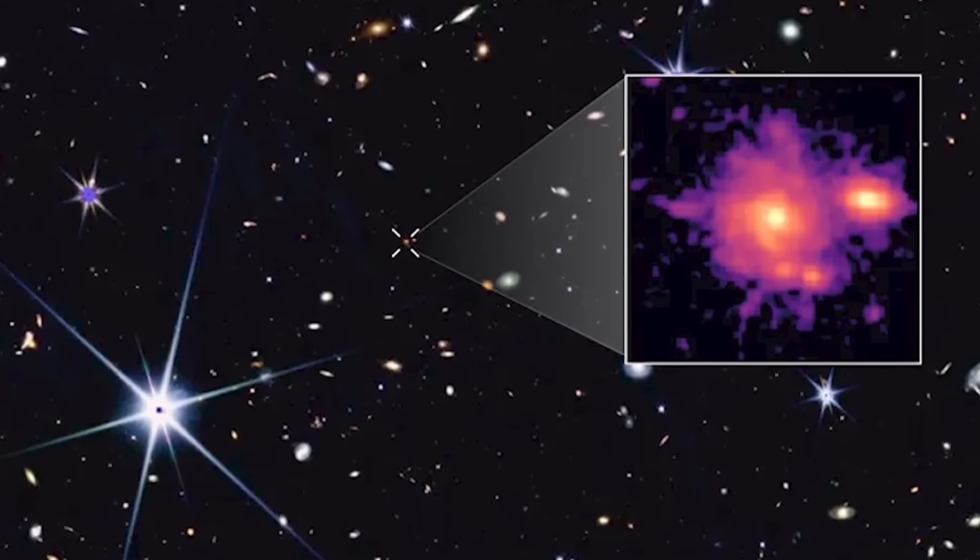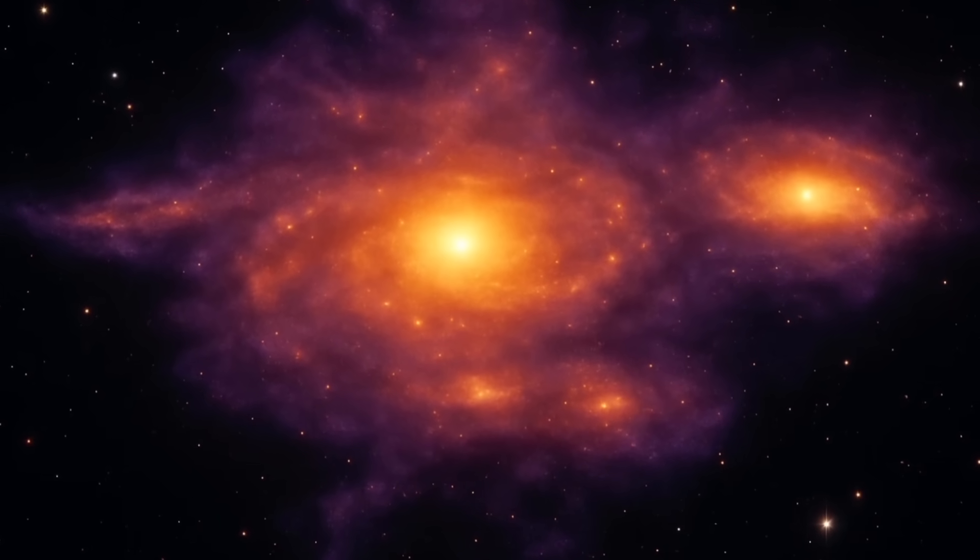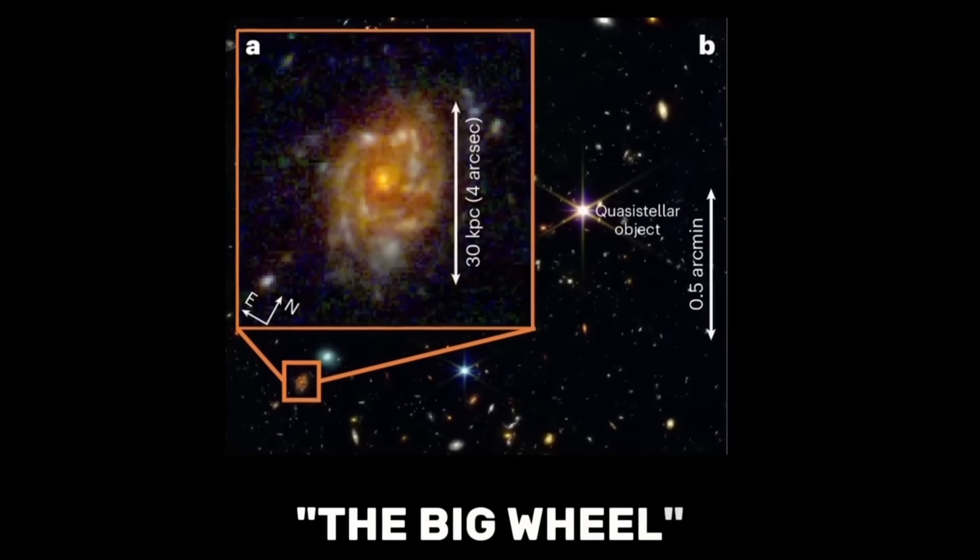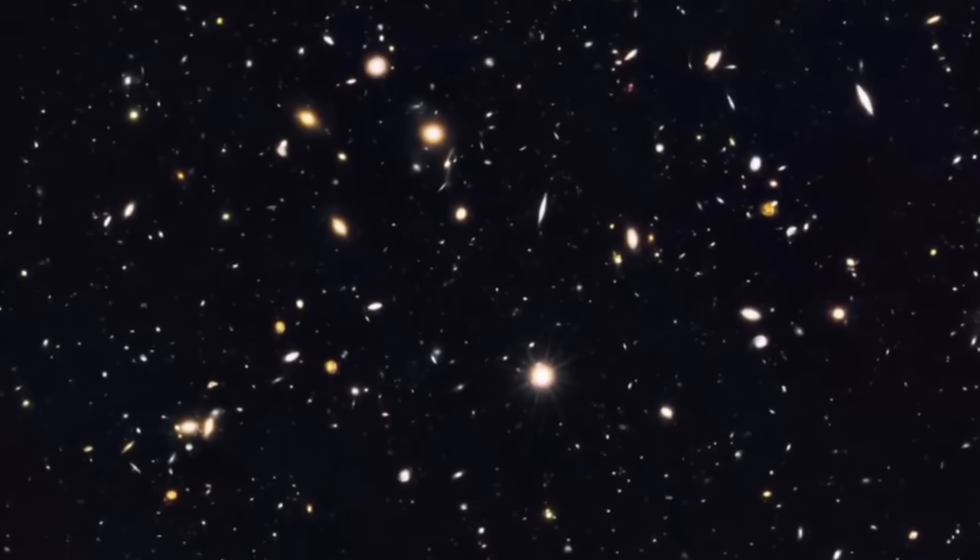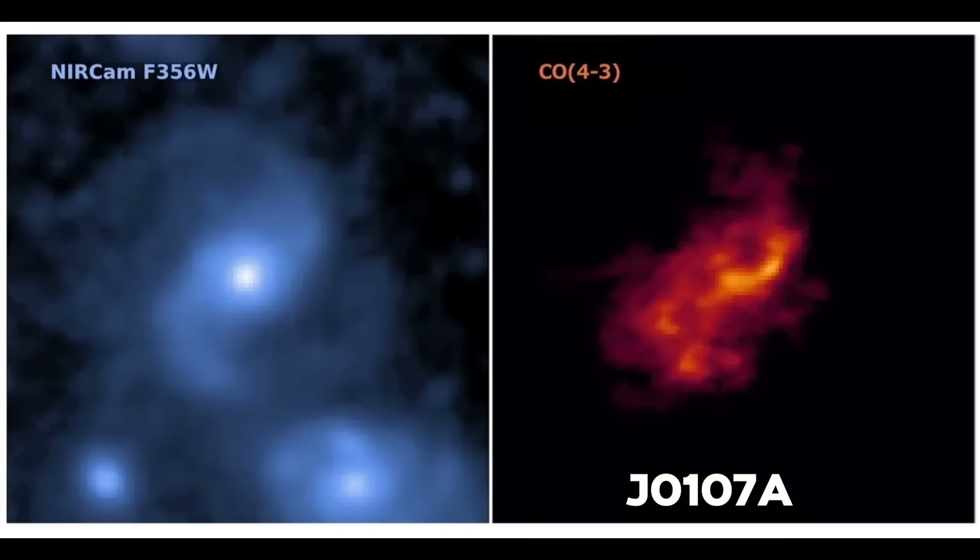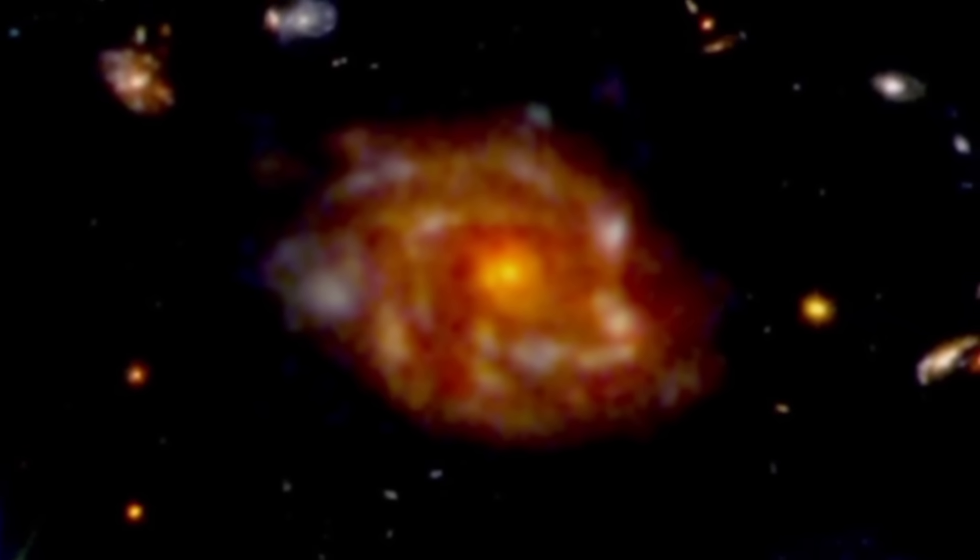Some of them already look well developed, similar to our Milky Way. They're not small or chaotic like we expected. Some even contain older stars, and a few are bigger than the Milky Way itself. One galaxy named J0107A, recently discovered, is about 10 times larger than our galaxy, and it existed when the universe was just a few hundred million years old. It is the largest Milky Way-like galaxy we have ever seen in the early universe.